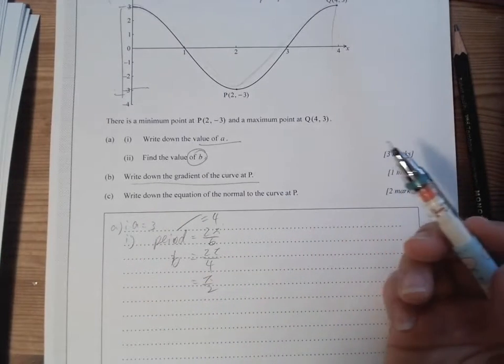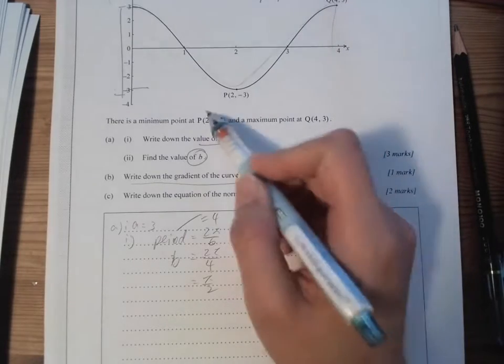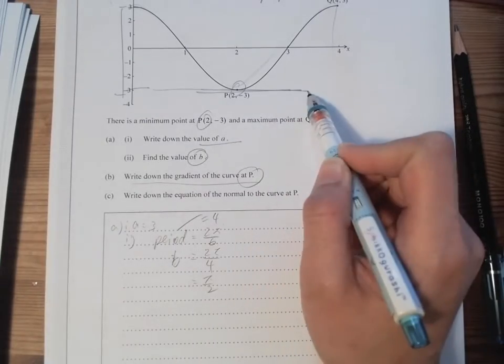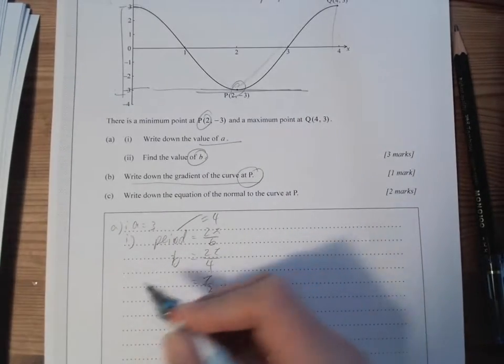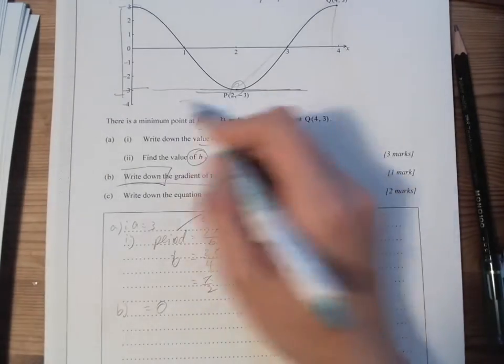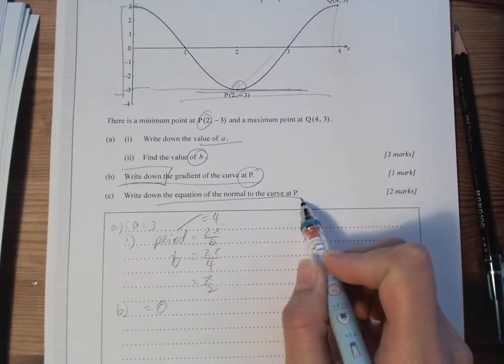All right, and then we need to write down the gradient of P, which is the differentiation. So we look at P here is the minimum point. Because the minimum point, the gradient of it is 0, so you don't need to have any calculation. It's a minimum point, so gradient is 0.